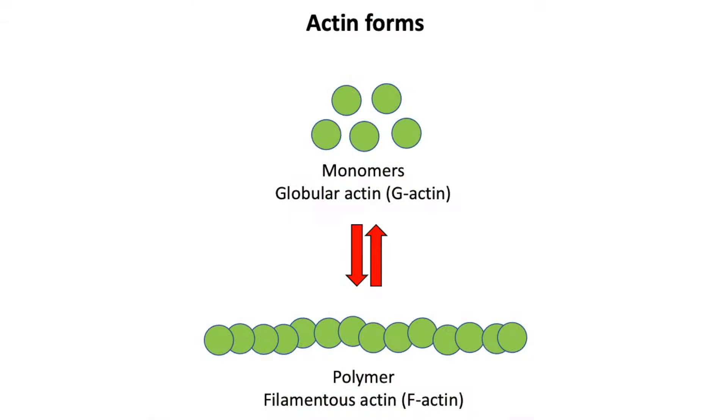Actin is the major component of the cytoskeleton and critically regulates several aspects of cellular morphology and physiology, including in neurons. Actin occurs in equilibrium between its two forms: monomeric globular G-actin and polymeric filamentous F-actin.